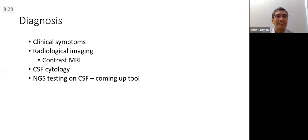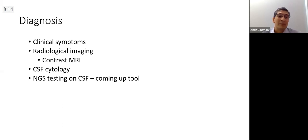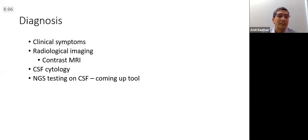These patients may be neurologically deteriorating — keep a very high index of suspicion and look for leptomeningeal disease. We do a contrast MRI — the best tool to show enhanced meninges — and CSF cytology, which shows positivity in at least 50 percent of cases on the first attempt.